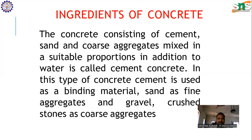Ingredients of concrete: The concrete consists of cement, sand, and coarse aggregates mixed in suitable proportions, in addition to water, and is called cement concrete. In this type of concrete, cement is used as a binding material, sand as fine aggregate, and gravel or crushed stones as coarse aggregates.